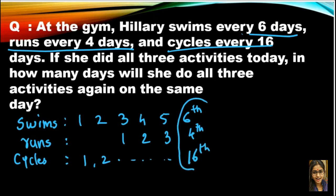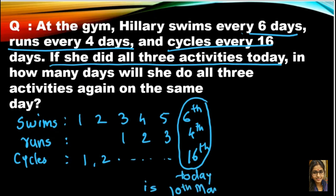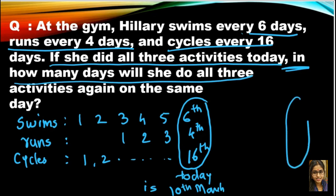Suppose this is your one day. What they are telling us is if she did all three activities today, this is suppose today. Suppose today is 10th of March. Then they are asking in how many days will she do all three activities again on the same day. Like this one day is coming again, in that day when she will do all three activities. So we have to calculate how many days after that one day will occur.